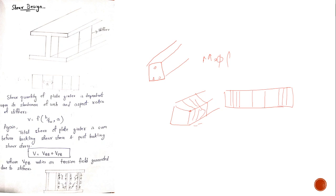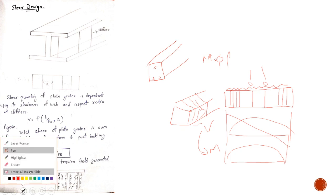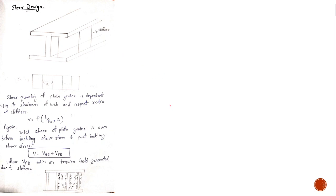The load applied to a flexure member — whether UDL or a point load — may cause both flexure and shear. You always draw the shear diagram and moment diagram of a beam, usually drawing the shear diagram first and then the moment diagram. A plate girder is actually a very long flexure member provided in mega bridges. It is a type of beam but is a built-up member, and today we are dealing with its shear design.